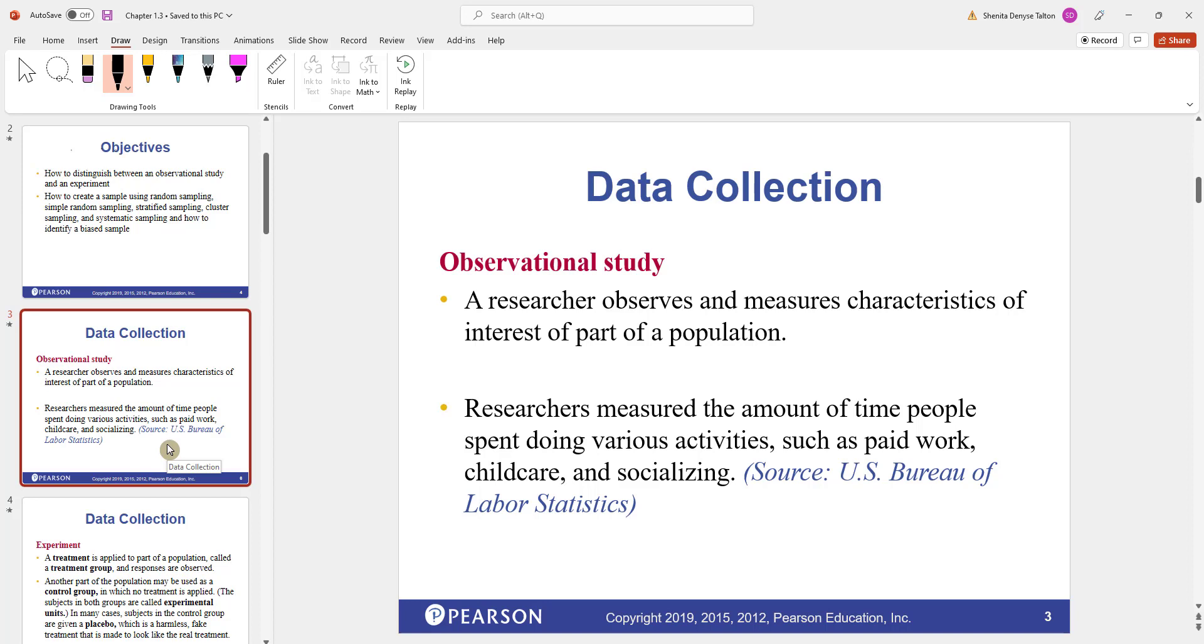An observational study is where a researcher observes and measures characteristics of interest of part of a population. For example, researchers measured the amount of time people spent during various activities, such as paid work, childcare, and socializing. All they did was observe this and make note of the time.